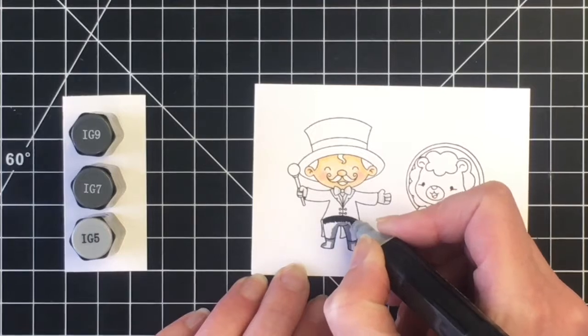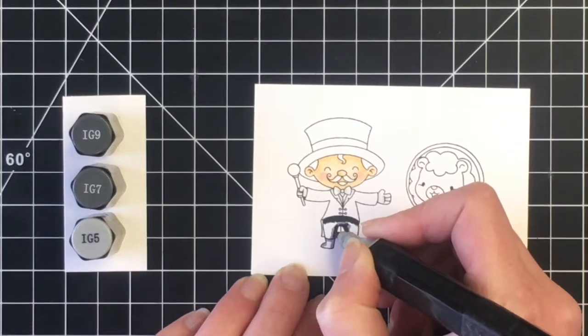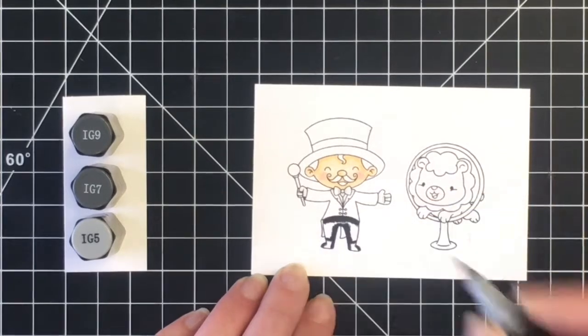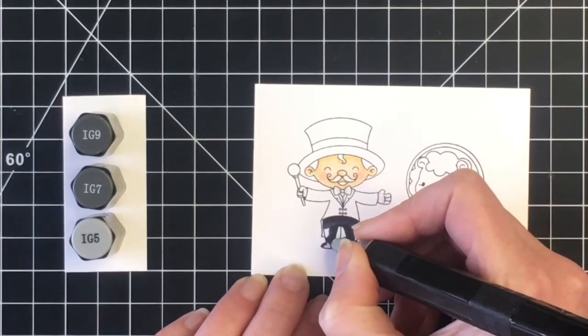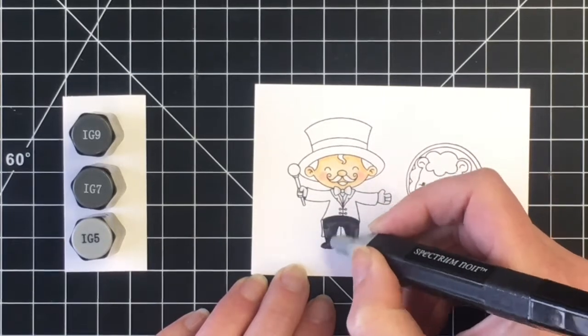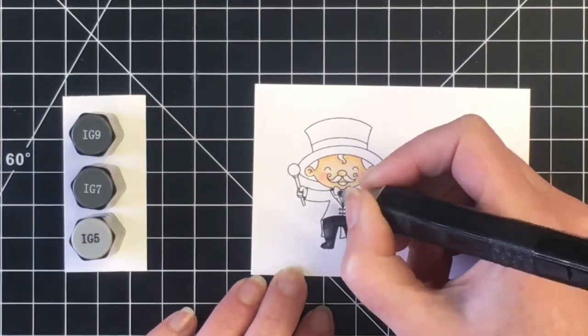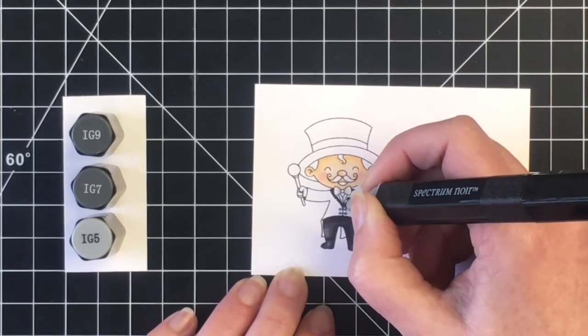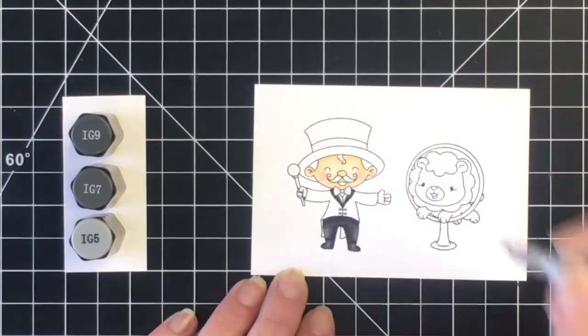So I just mapped out my darkest areas there with the IG5, and now I'm coming in with my darkest marker, which is the IG9. My midtone will be the IG7. Just creating some shadows underneath his jacket and then on the inner sides of his legs, and then down towards his shoes where they kind of come in a little bit, and then on the back sides of the shoes. I'm going to blend that in with my IG5, which is my lightest, and now I'm going to work on the lapel of his jacket. This is a very tiny spot so I'm just using the IG9 sparingly, as well as the IG7, and then blending that out with the IG5.